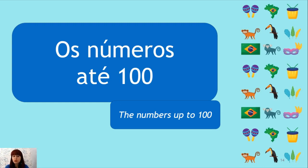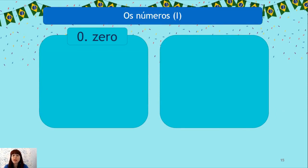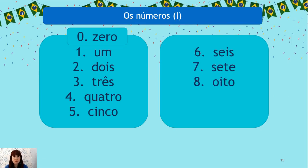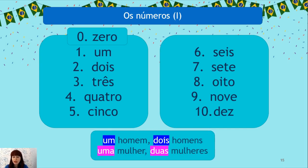Os números até dez: zero, um, dois, três, quatro, cinco, seis, sete, oito, nove, dez. Pay attention: Um homem, dois homens — um and dois refer to a masculine noun. Uma mulher, duas mulheres — the numbers one and two refer to feminine nouns. Only one and two have this feminine form — that's the only case.